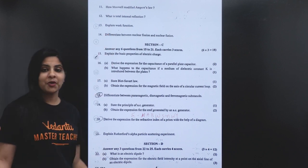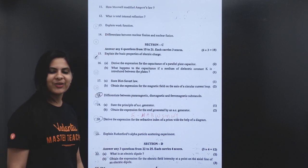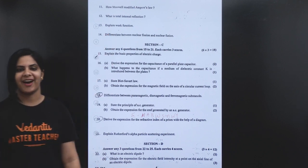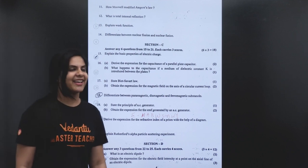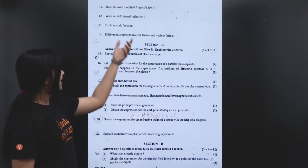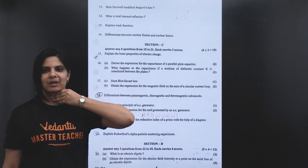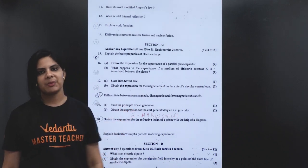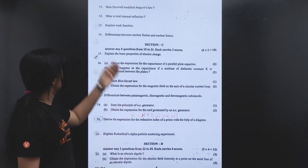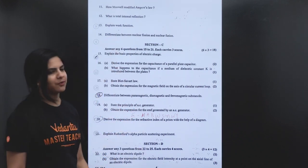Work function: the minimum energy required for an electron to escape from the metal surface. Then, differentiate between nuclear fusion and fission.